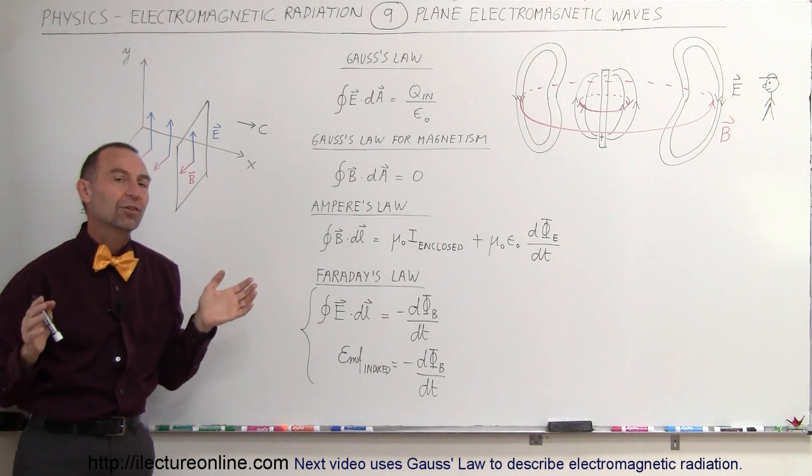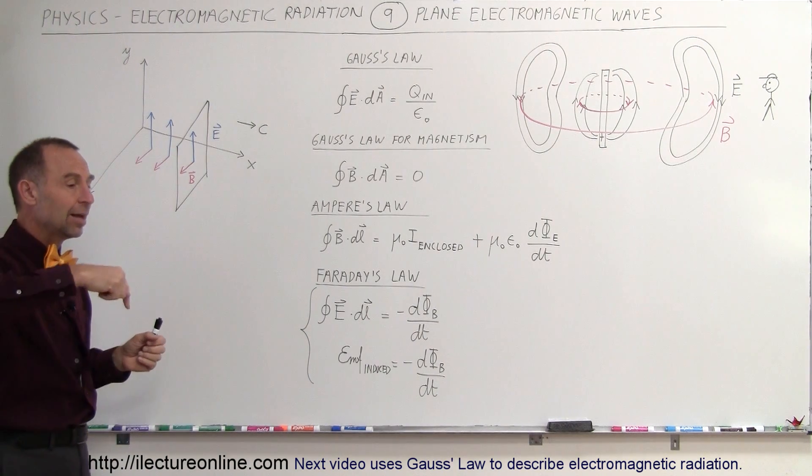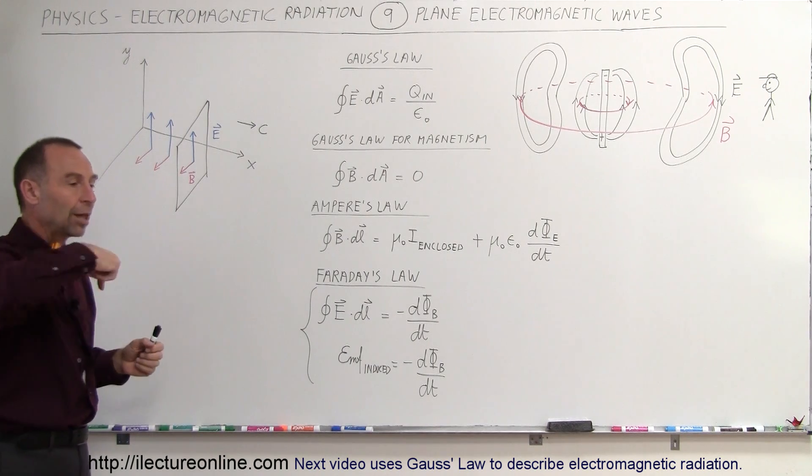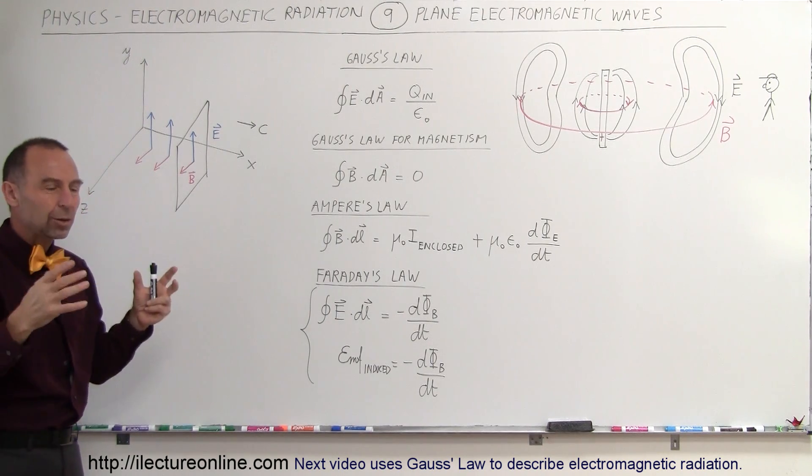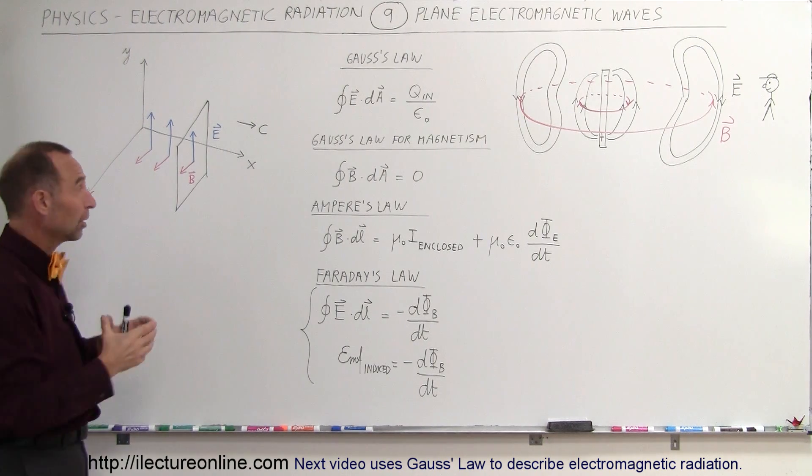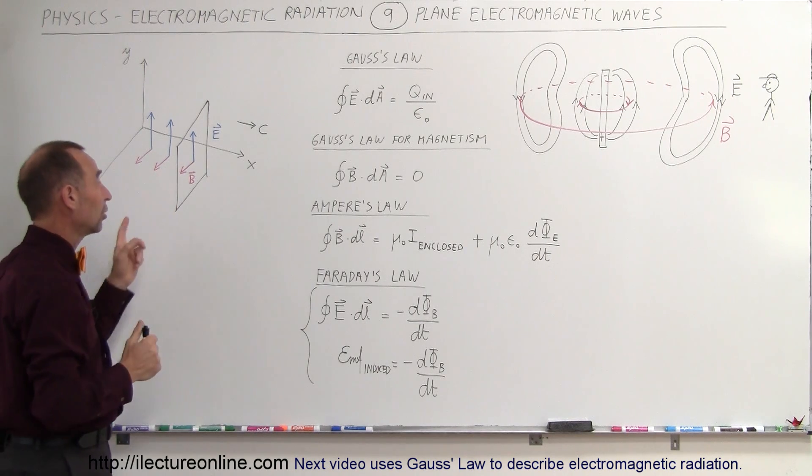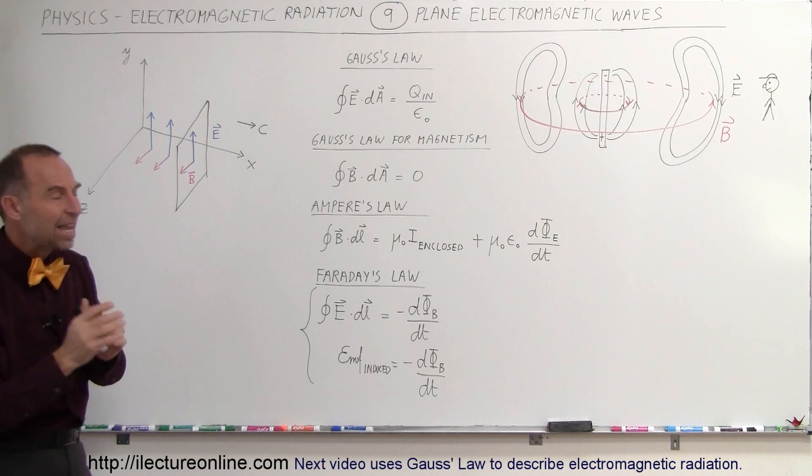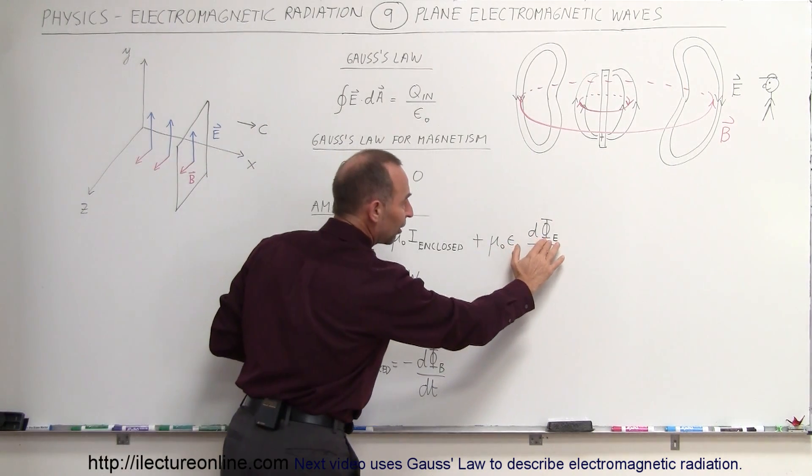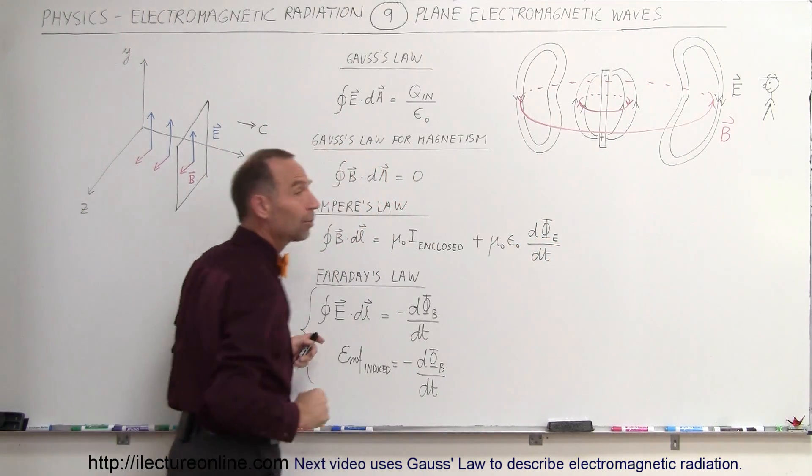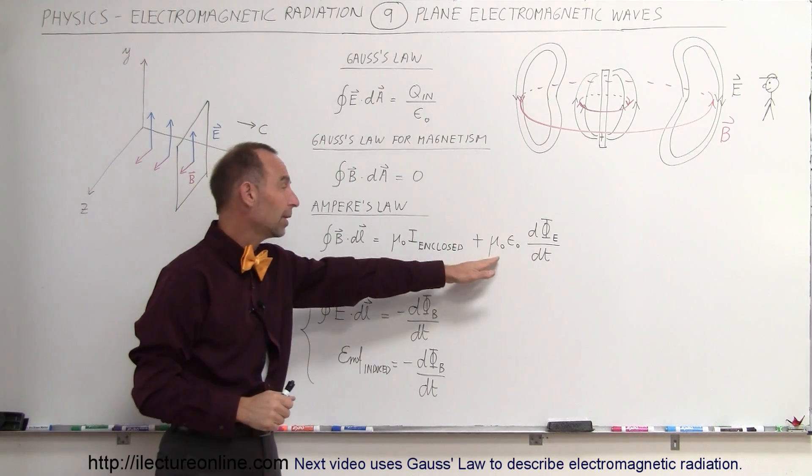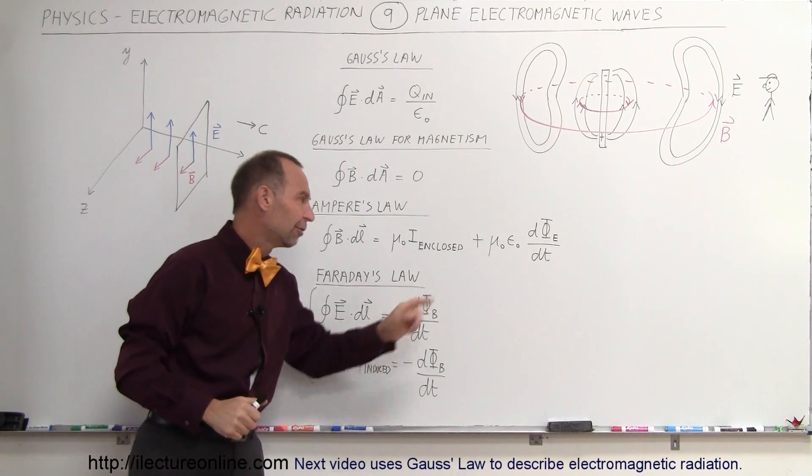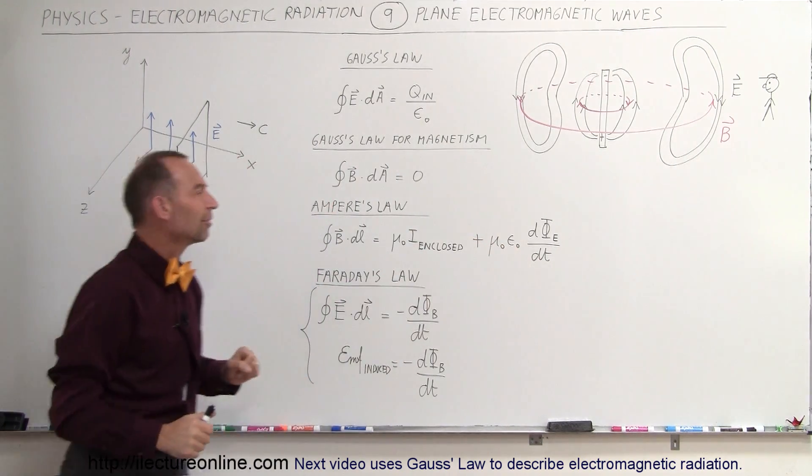Thirdly, we can look at Ampere's law. Ampere's law says that if we integrate the strength of the magnetic field around the loop, that should always equal the current inside that loop. Now, you can see there's not going to be any current inside the loop, but they also realized that it can also be equal to the change in the electric field flux per unit time times some constant. This, of course, is the permeability and the permittivity of free space.